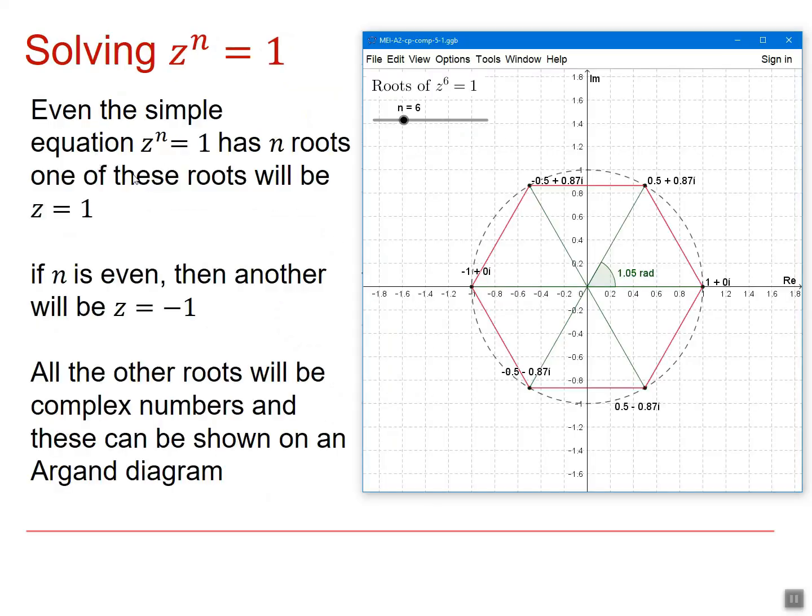The simple equation, Z to the n equals 1, has n roots, and one of those roots will always be 1. If n is even, however, there will be another real root at minus 1. All the other roots will be complex numbers, which can be shown on an Argand diagram.